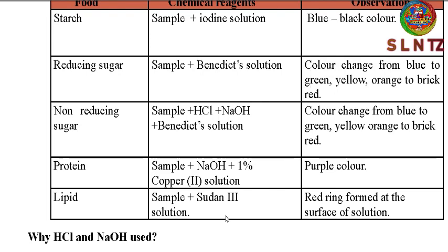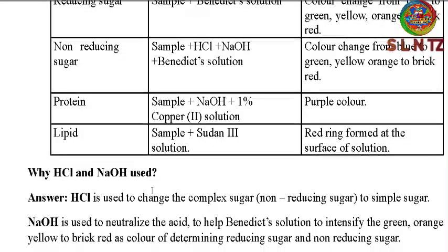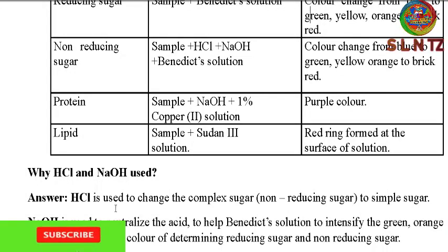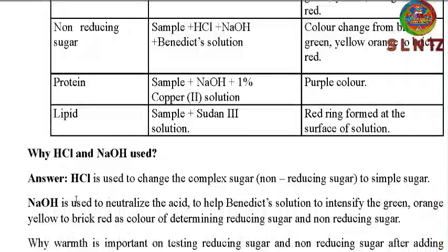Remember that for the lipid test, a layer of lipid forms at the top, at the surface of the solution. Now, why do we use HCl and sodium hydroxide in testing non-reducing sugar? Hydrochloric acid is used to convert complex sugar or non-reducing sugar to simple sugar. The function of sodium hydroxide is to neutralize the acid and to help Benedict's solution intensify the color change to brick red.